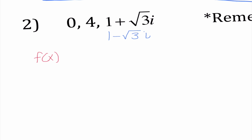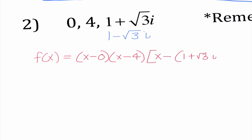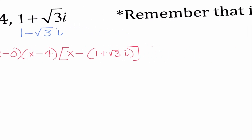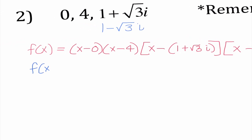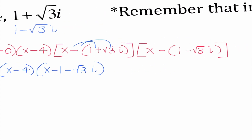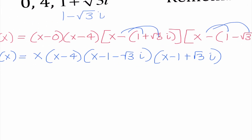Factored form: I have x minus 0 times x minus 4 times x minus the quantity 1 plus radical 3i, times x minus the quantity 1 minus radical 3i. I distributed that negative for both of those. I'm going to group these two together and these two together and do some work at the same time.